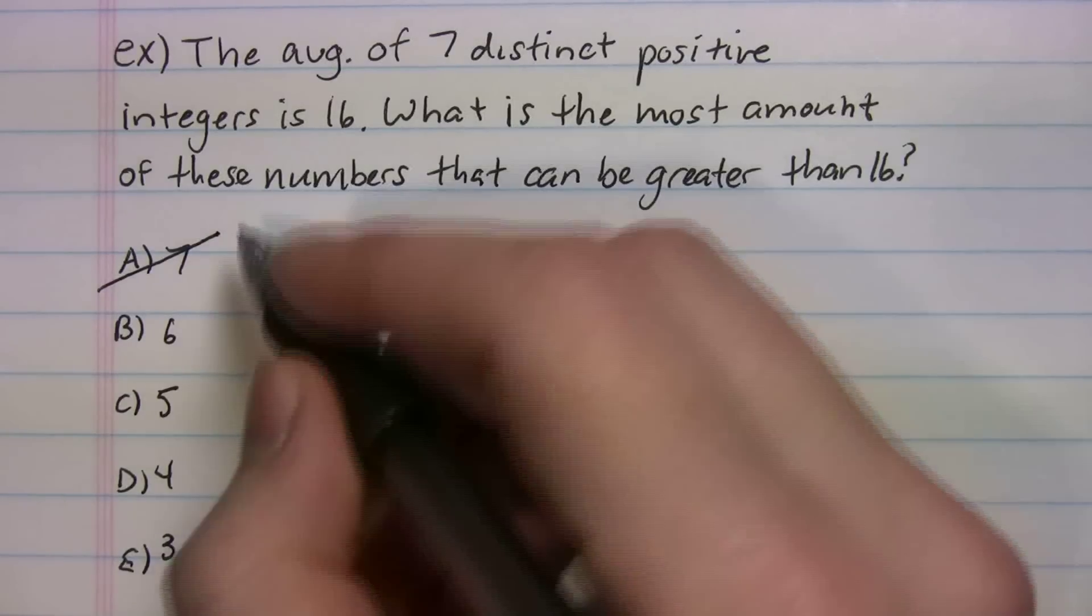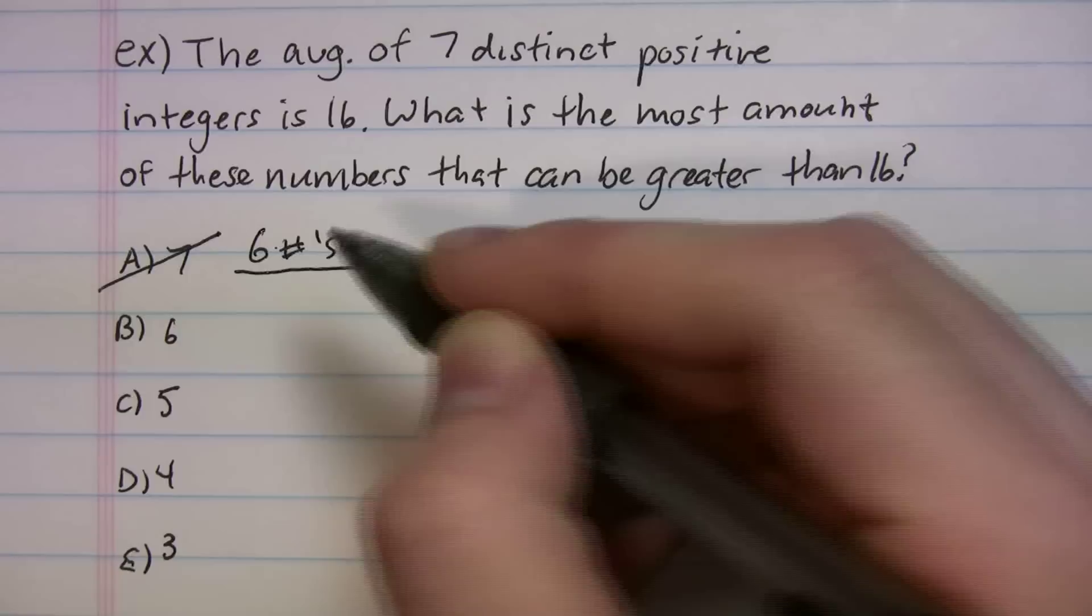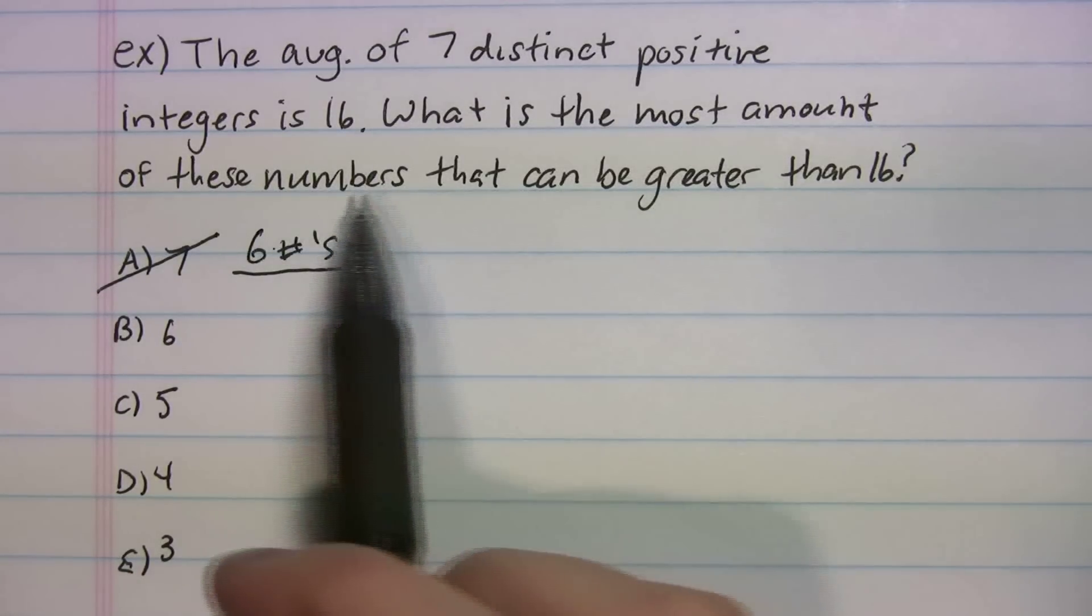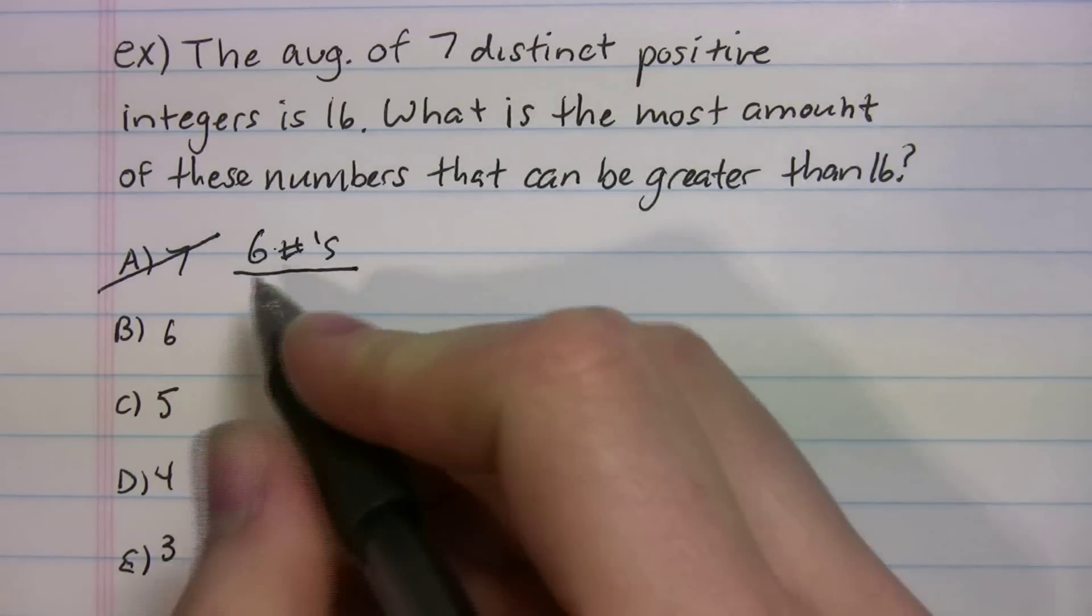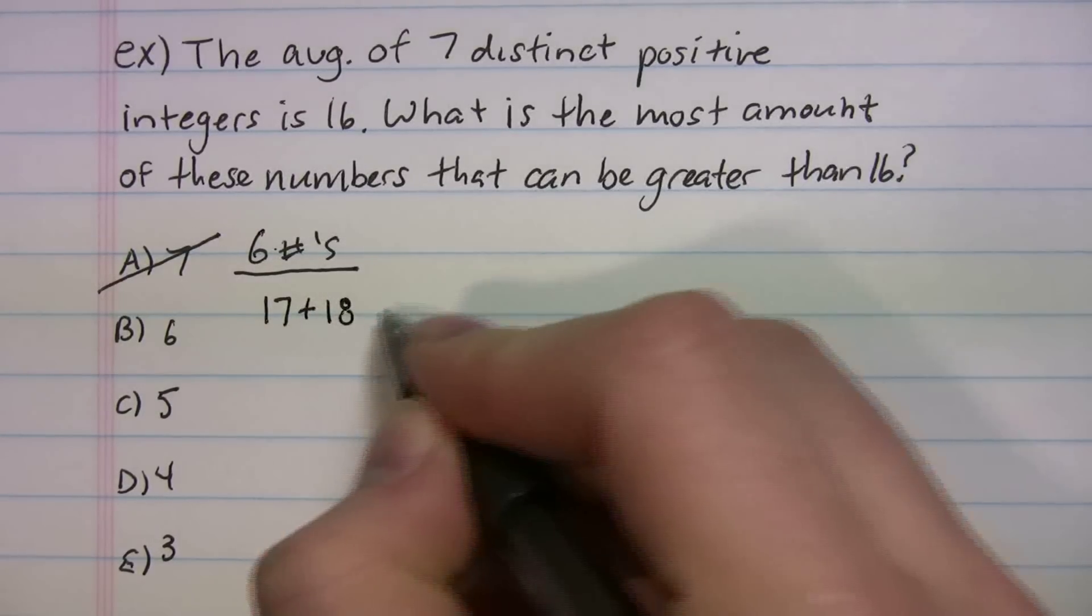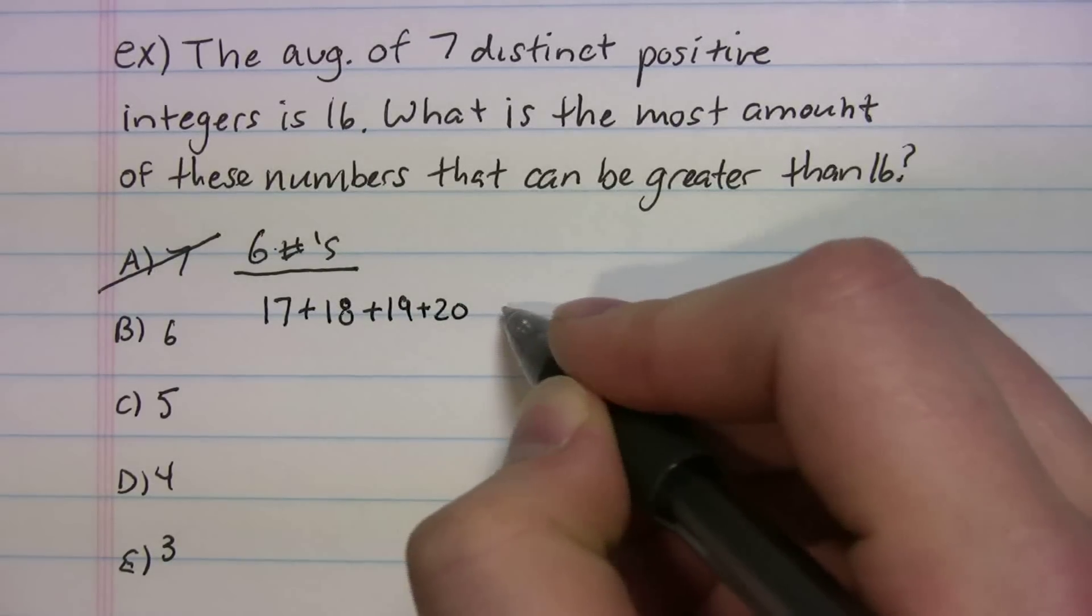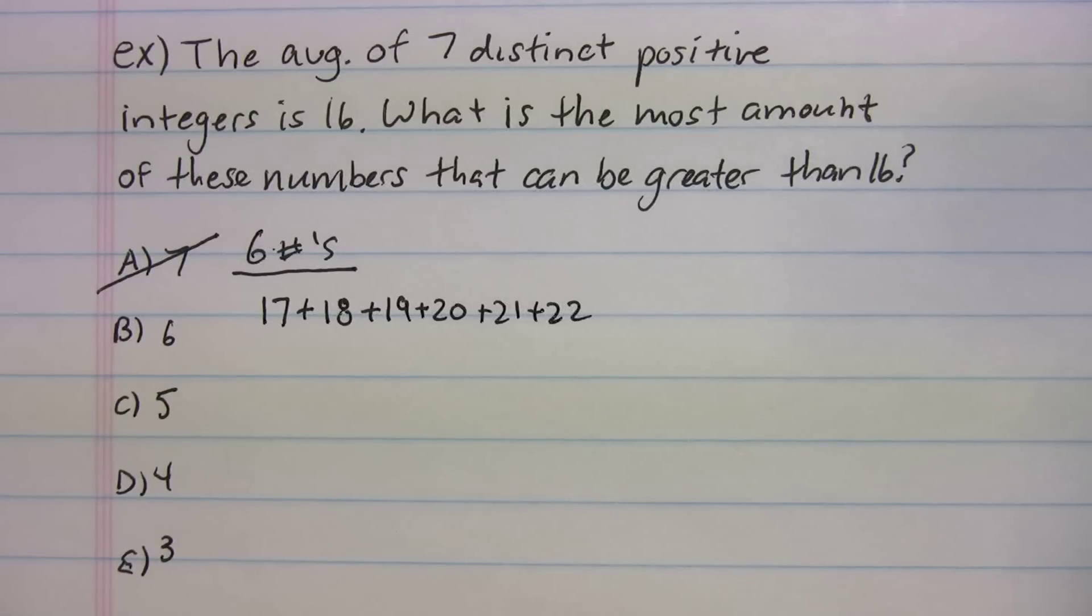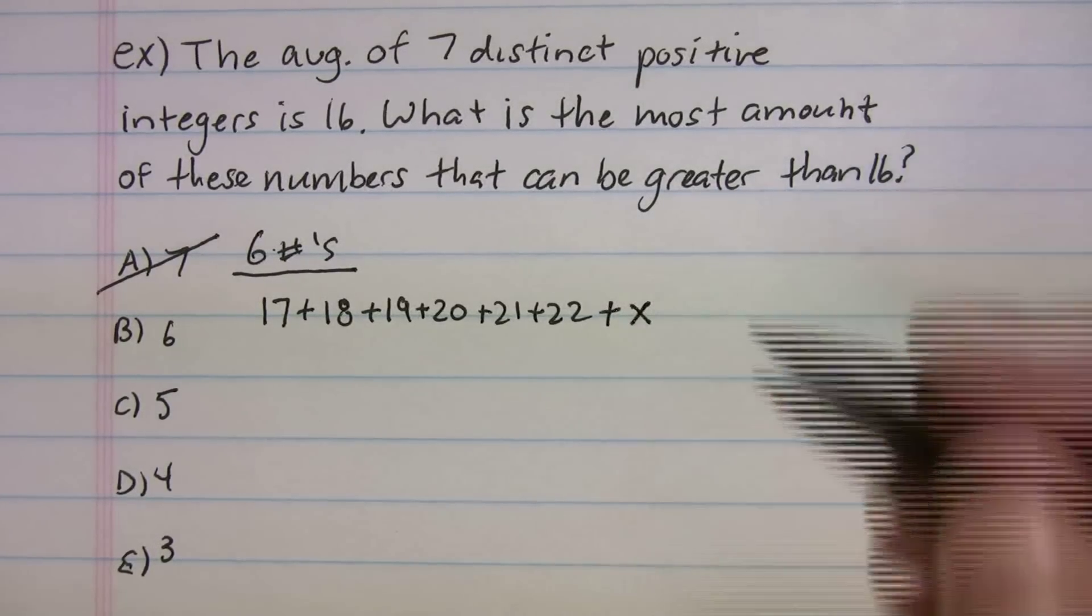Let's look at six. So if we're picking B to be right, what does that mean? That means that six numbers can be greater than 16. And they're all distinct. So let's pick the numbers. Let's say they were 17, 18, 19, 20, 21, and 22. There's six numbers, right? And we're going to add x. That's going to be our missing number.